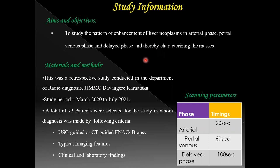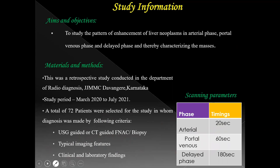This was a retrospective study conducted in the Department of Radiodiagnosis, GGMC, Karnataka, for a study period of one year. A total of 72 patients were selected, in whom diagnosis was made by USG-guided or CT-guided FNAC or biopsy, or by typical imaging features, or by clinical and laboratory findings. Scanning parameters: arterial phase at 20 seconds, portal venous phase at 60 seconds, and delayed phase at 180 seconds.